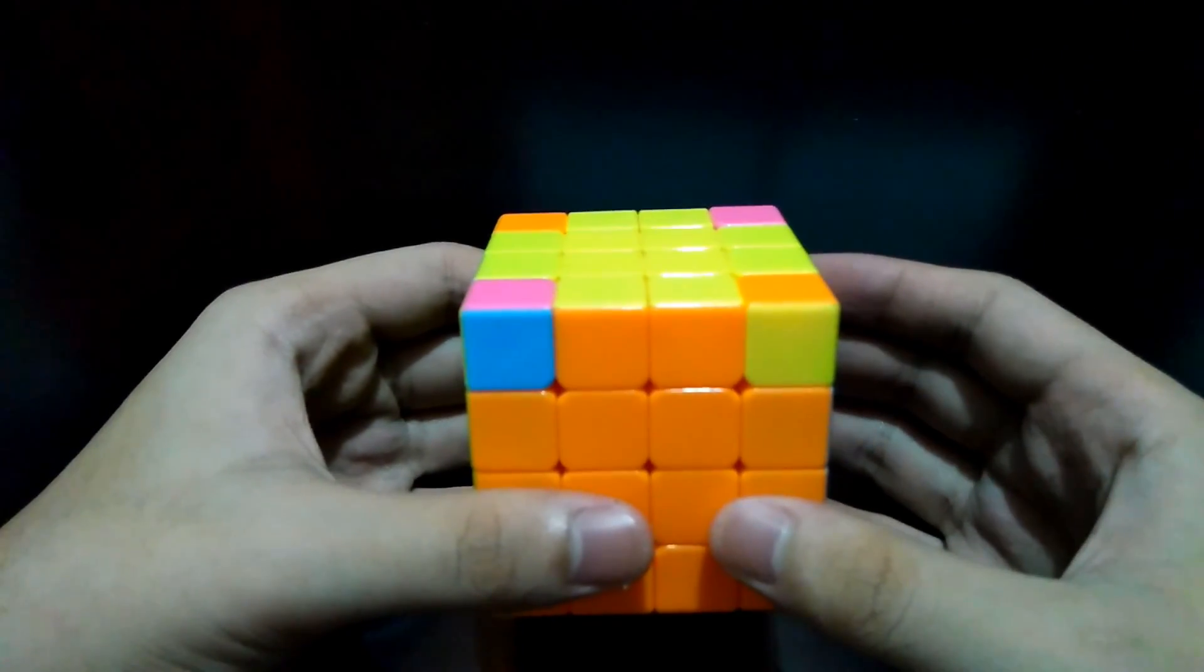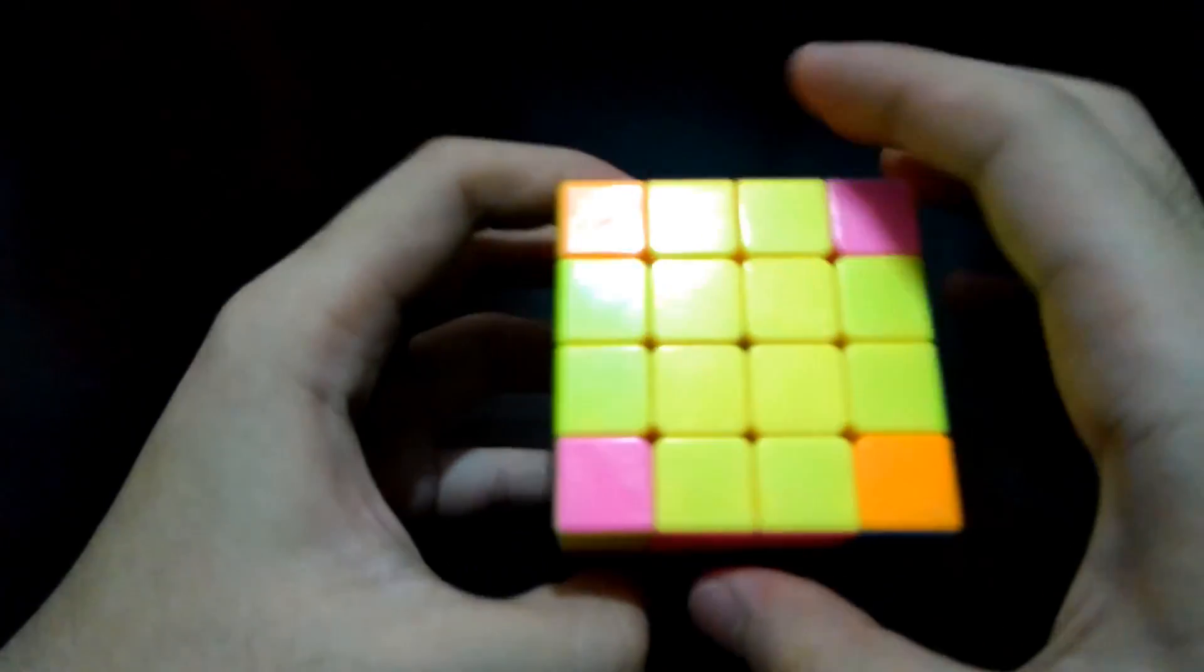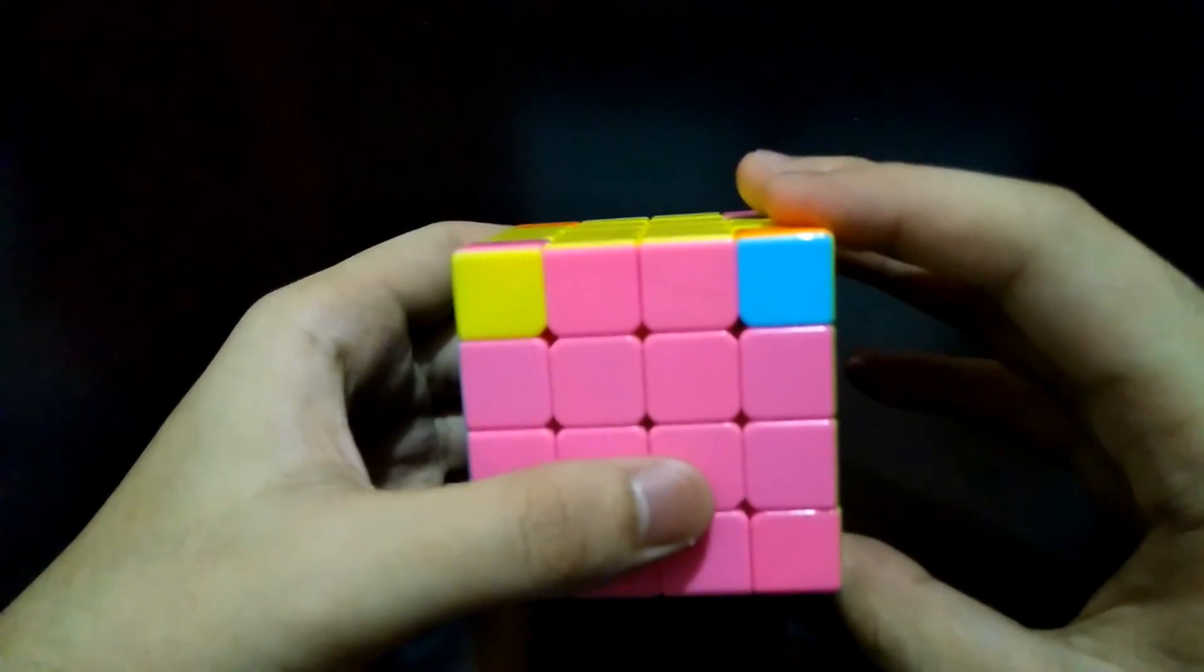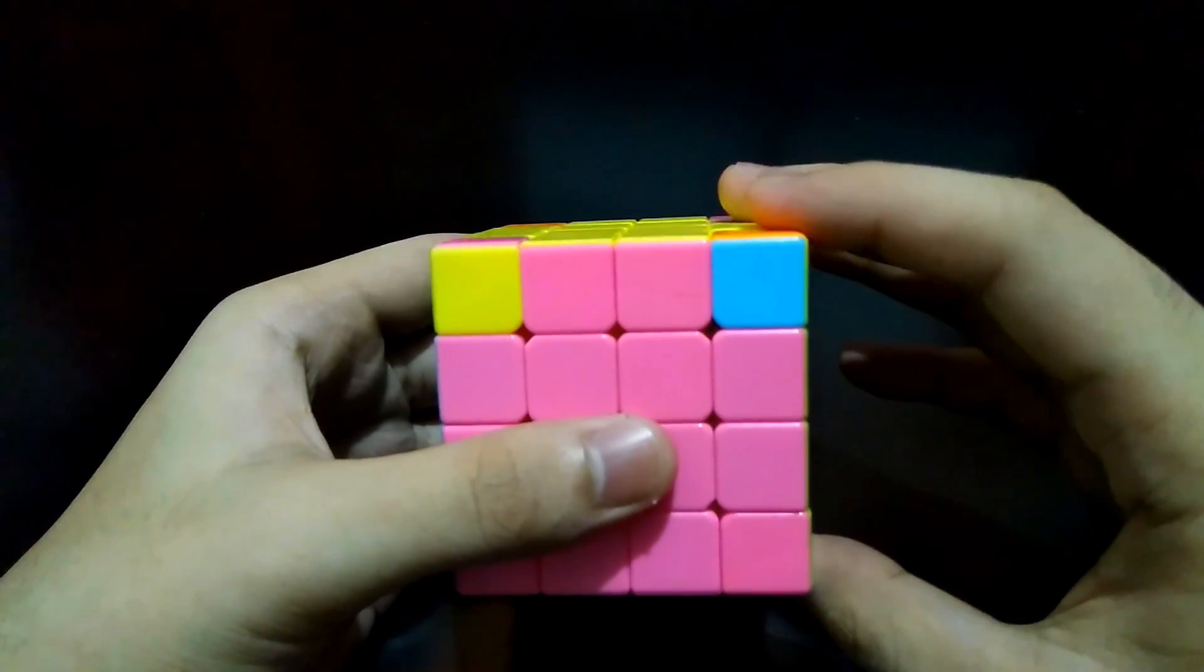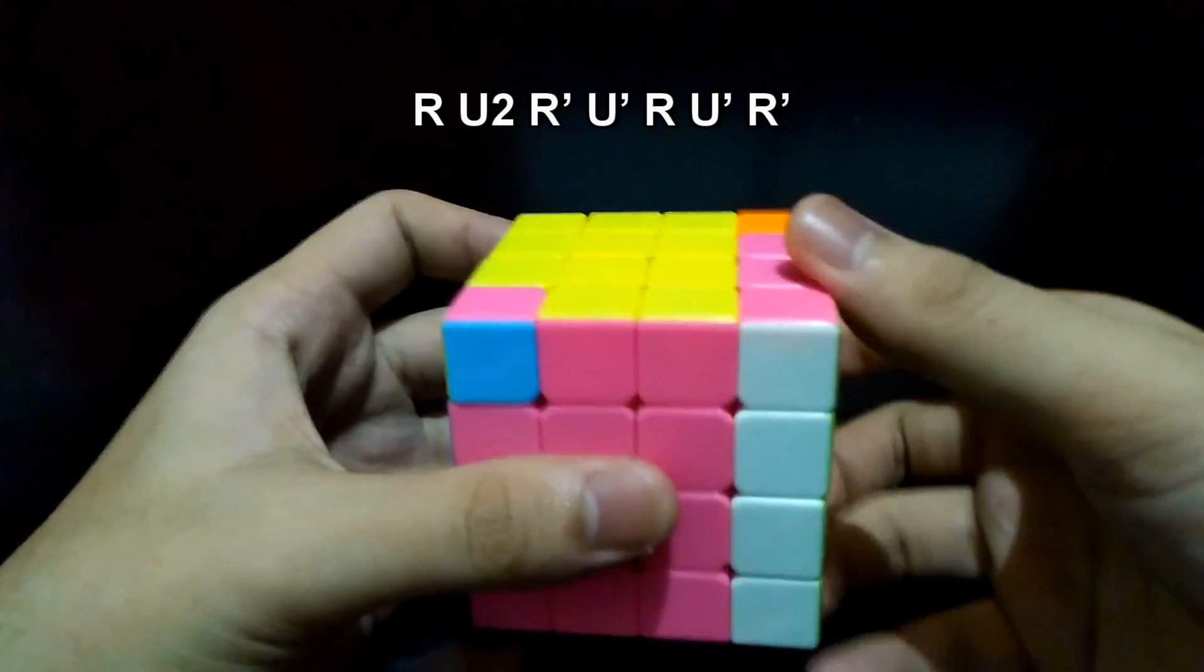Okay, let's see. There are two correct edges. You may face any side and do this algorithm like in the normal 3x3: Right, Up 180 degrees, Right prime, Up prime, Right, Up prime, and Right prime.